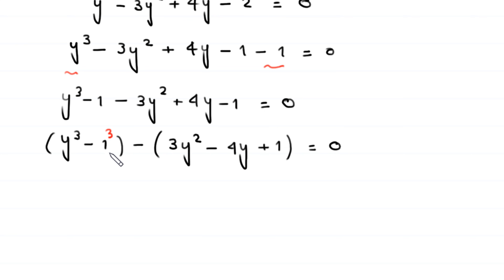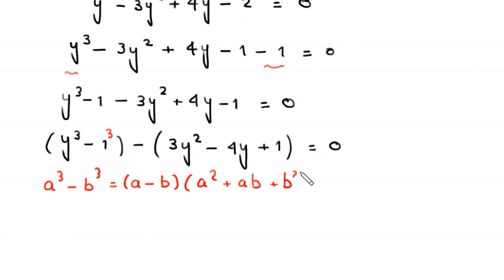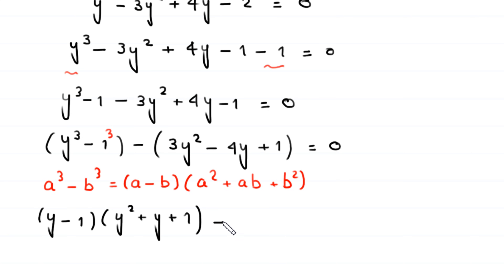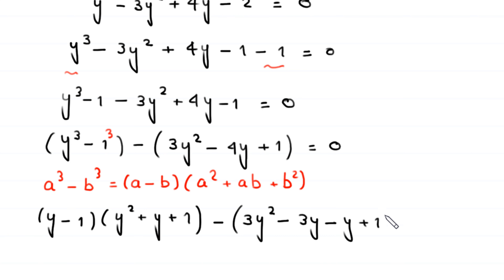Since 1 = 1³, we apply the identity a³ − b³ = (a − b)(a² + ab + b²) to factor y³ − 1³ as (y − 1)(y² + y + 1). For the quadratic 3y² − 4y + 1, we split −4y as −3y − y, giving 3y(y − 1) − 1(y − 1).